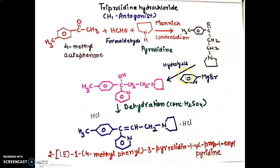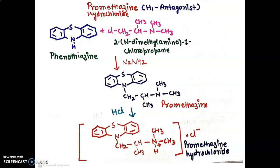This intermediate is further treated with 2-pyridyl magnesium bromide, which is a Grignard reagent, giving another intermediate. After dehydration in the presence of concentrated H2SO4, followed by treatment with hydrochloric acid, we get the salt — that is, tripelennamine hydrochloride. This way we synthesize the second drug, an H1 antihistamine.